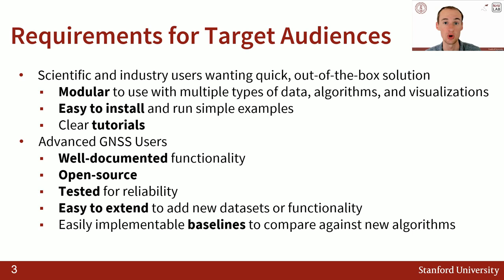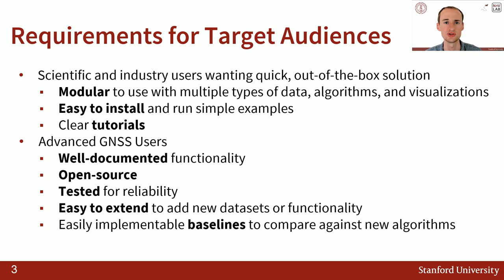For more advanced GNSS users who maybe want to add their own functionality, we wanted it to be completely documented at the function level. We wanted to make sure that it's open source so you can view all of the code publicly. We wanted to make sure that it's tested, so users can have confidence that what is there works, and if you add new functionality, what was there previously still works. We wanted to be able to easily add new functionality so new state-of-the-art algorithms can be quickly and easily added. And we wanted to have baseline solutions — for example, weighted least squares or extended Kalman filter positioning algorithms — that you could compare against new algorithms that you develop.